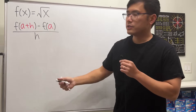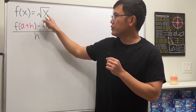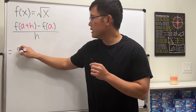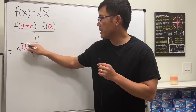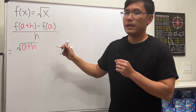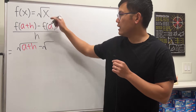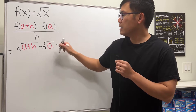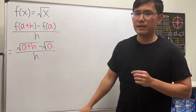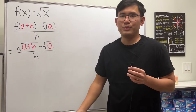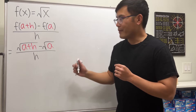For this next example, we put a+h into x, so we're looking at the square root of (a+h), minus the square root of a, all divided by h.